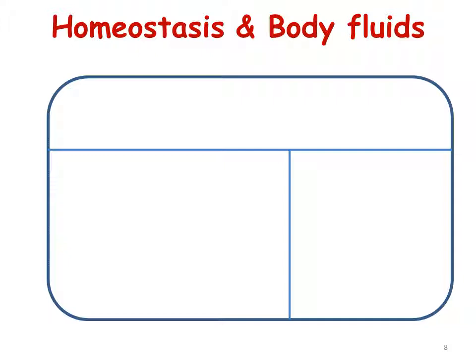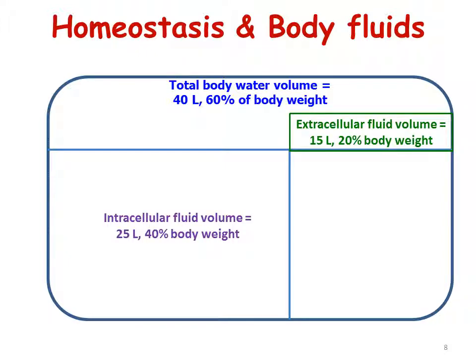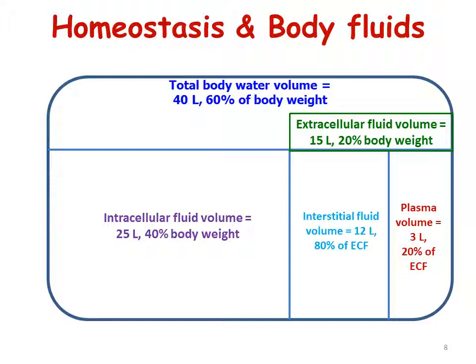The body fluids can be divided into different compartments. Total body water volume is around 40 liters, constituting about 60% of body weight. This comprises intracellular fluid (ICF) at about 25 liters (40% of body weight) and extracellular fluid (ECF) at around 15 liters (20% of body weight), which is divided into plasma at about 3 liters (20% of ECF) and interstitial fluid at around 12 liters (80% of ECF).